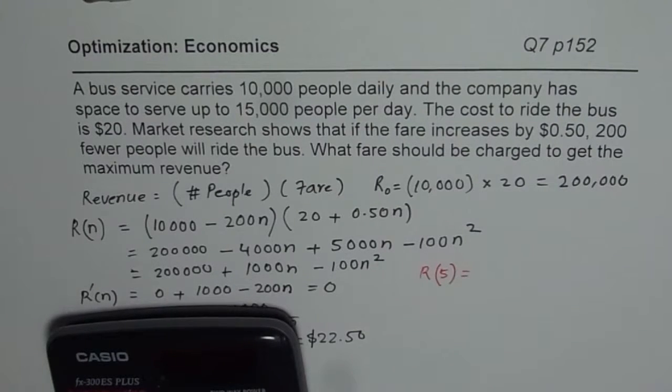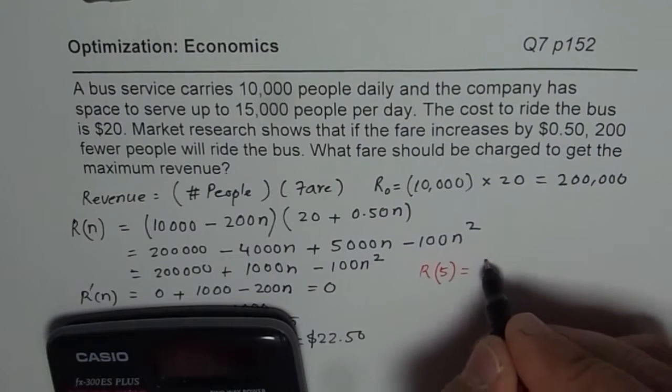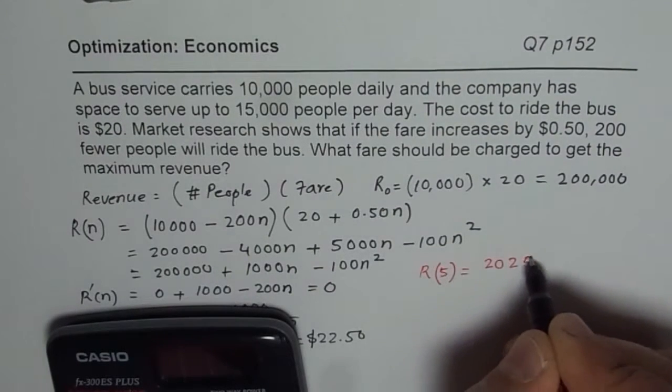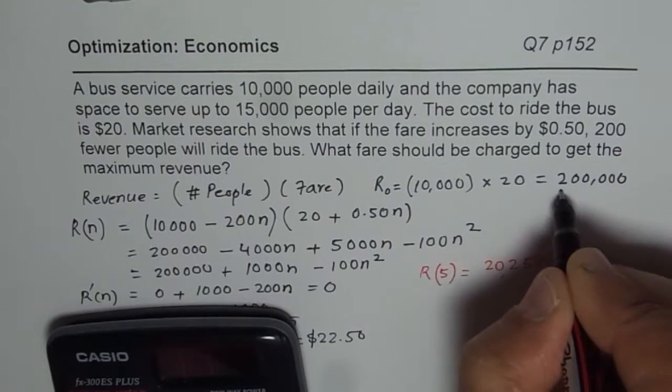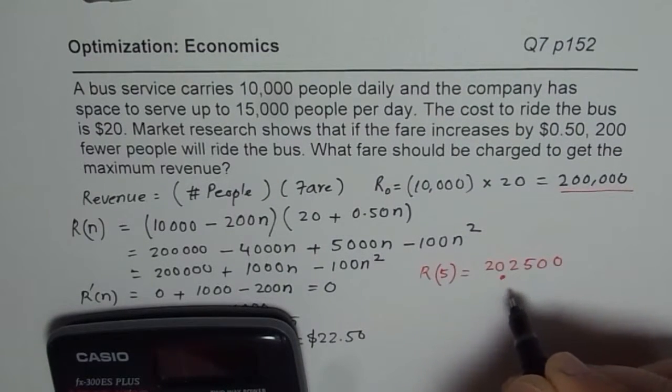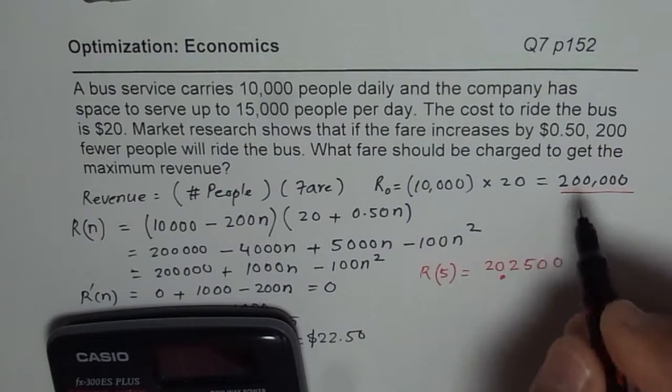So that gives us a value, which is 202,500. So it is clearly more than this. So 202,500.